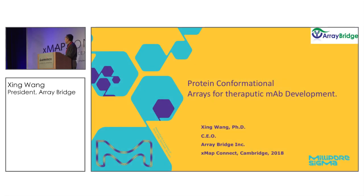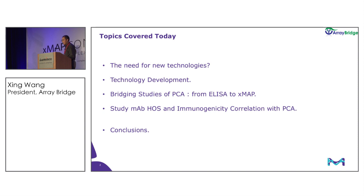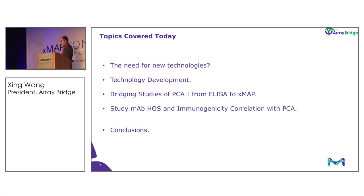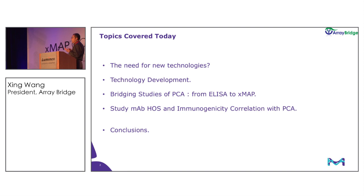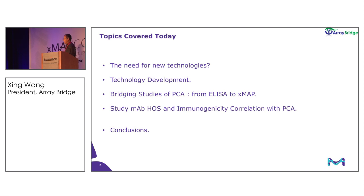Today my talk is about using the protein conformational assay for therapeutic mAb development. The topics I'll cover include: why we need a new technology in this area, how we developed this technology, bridging studies from our original ELISA format to XMAP, using this new technology to study immunogenicity and structure correlation, and finally conclusions.